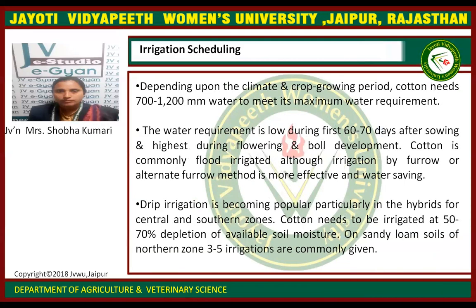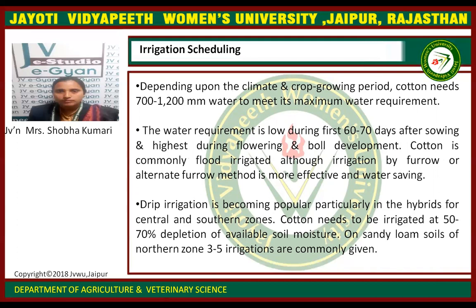Irrigation scheduling for the cotton crop. Depending upon the climate and crop growing period, cotton needs 700 to 1200 mm of water to meet its maximum water requirement. Water needs throughout the life cycle of the crop — the total amount of water needed for the complete life cycle is known as the water requirement. The water requirement is low during the first 60 to 70 days after sowing and highest during flowering and boll development. Cotton is commonly flood irrigated, although irrigation by the furrow or alternate furrows method is more effective and water-saving. Drip irrigation is becoming popular, particularly for hybrids in the central and southern zones. Cotton needs to be irrigated at 50 to 70% depletion of available soil moisture. On sandy soils of the northern zone, 3 to 5 irrigations are commonly given.